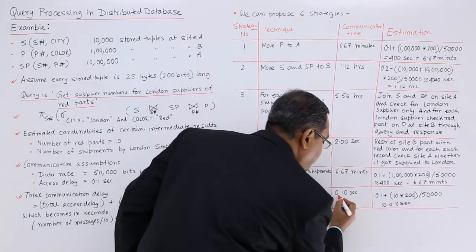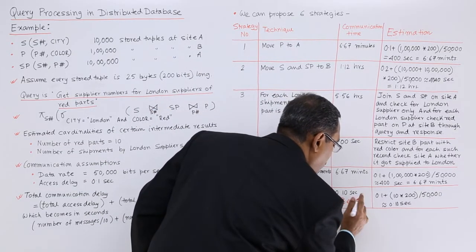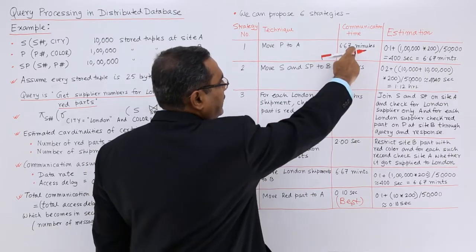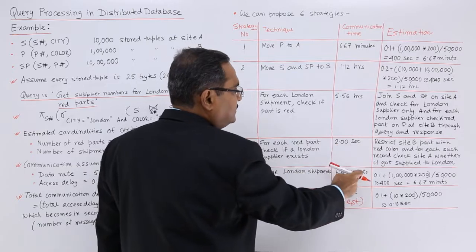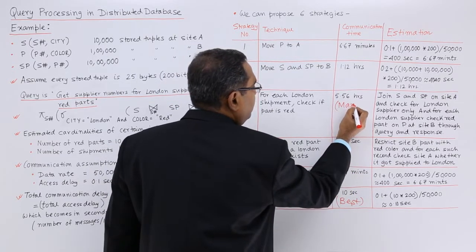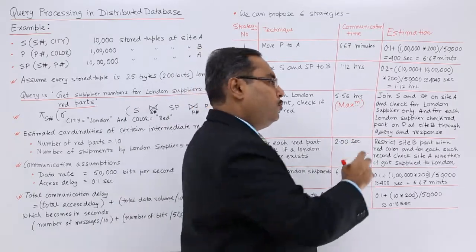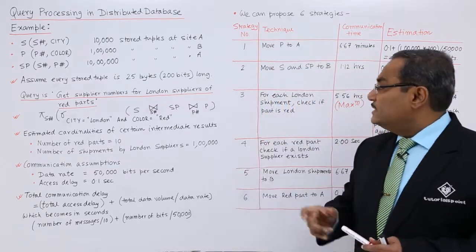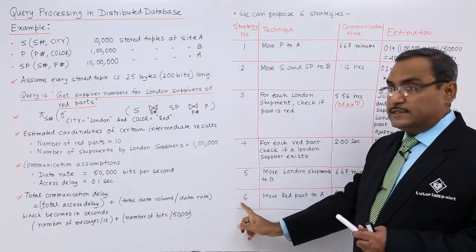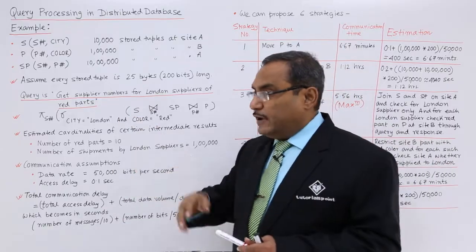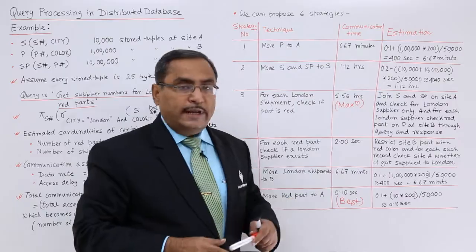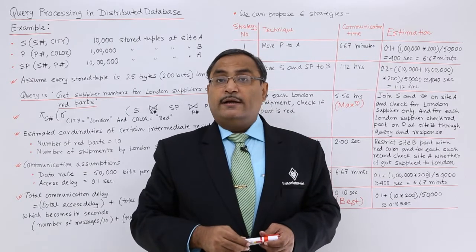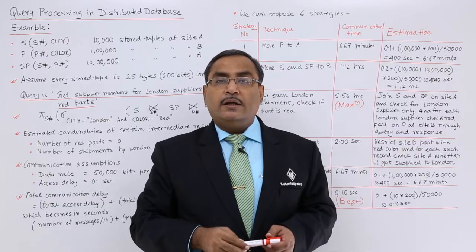Strategy 6 (move red parts to A, ~0.10 seconds) is the best strategy, while Strategy 3 (5.56 hours) gives the maximum communication time. We have done the calculations and estimations for all 6 strategies, using the given numerical values to compare them. Now you should understand what query optimization and query execution estimation are, and how query processing can be done in a distributed database.